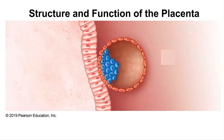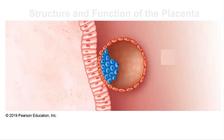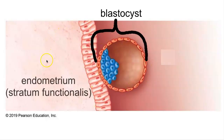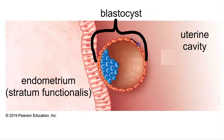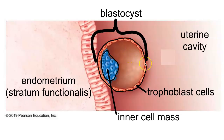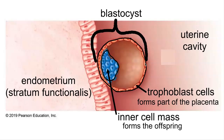To understand the structure of the placenta, it helps to understand the structure of a blastocyst. Here is a blastocyst implanting, starting implantation. This is the endometrium, and this would be the uterine cavity. The blastocyst is made up of two parts: the outer red trophoblast cells, and the inner cell mass inside that hollow spherical structure. The trophoblast cells will give rise to the placenta, whereas the inner cell mass is going to give rise to the organism.